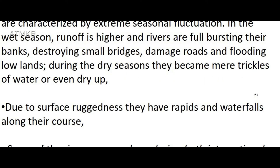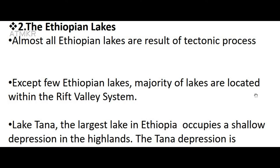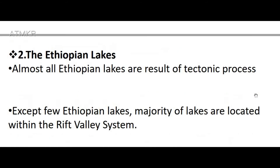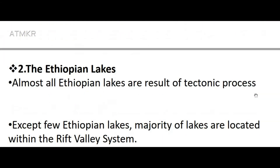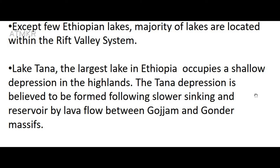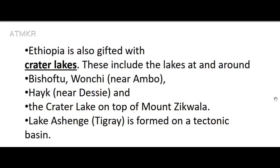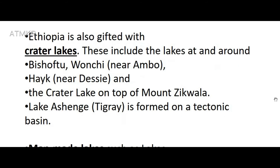Almost all Ethiopian lakes are the result of tectonic processes, except a few. The majority of lakes are located within the Rift Valley system. Lake Tana, the largest lake in Ethiopia, occupies a shallow depression in the highlands; the Tana depression is believed to have formed following slower sinking and damming by lava flow between the Gojjam and Gondar massifs. Ethiopia is also gifted with crater lakes, including Hora Lake near Debre Zeit/Bishoftu, Wanchi near Ambo, Hayk near Dessie, and the crater lake on top of Mount Zuquala.